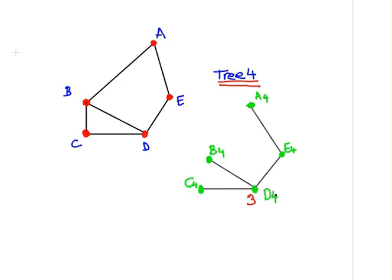So we actually have only two non-isomorphic spanning trees: tree four, and one of the previous trees we have seen previously—tree one, two, or three. And that ends our presentation.